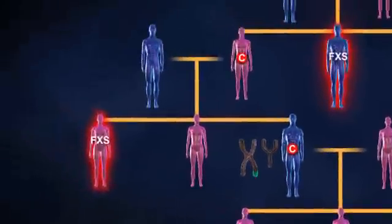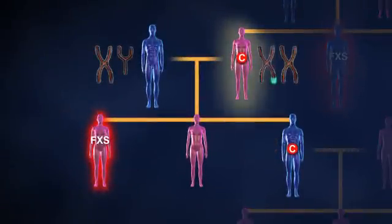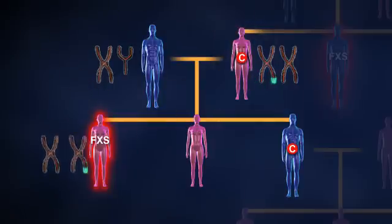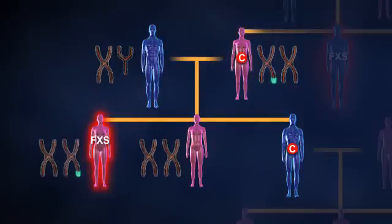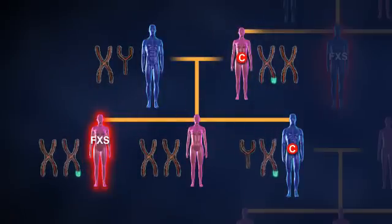Because females have two X chromosomes, children born to female carriers have a 50% chance of inheriting the affected gene. If the gene is inherited they will either be a carrier or have Fragile X syndrome.